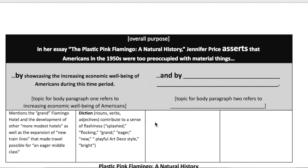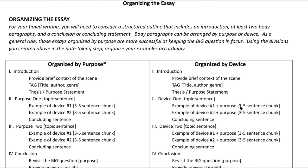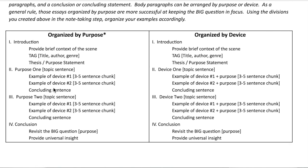There are categories of diction — nouns, verbs, adjectives — that contribute to a sense of flashiness, like splash, flocking, grand, eager, new, playful, art deco style, and bright. For your timed writing, you'll need to consider a structured outline that includes an intro (which is a PFS), at least two body paragraphs, and a conclusion. Body paragraphs can be arranged by purpose or device. As a general rule, essays organized by purpose are more successful at keeping the big question in focus. Using the divisions you created in the note-taking step, organize your examples accordingly.